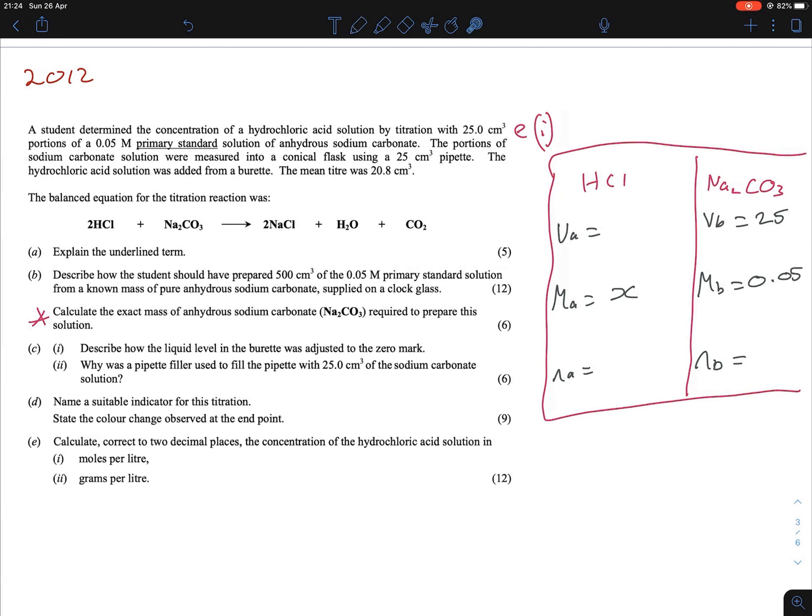We'll continue reading on. The portions of the sodium carbonate were measured in a conical flask with a 25 cm³ pipette. That's just how they measured the Na₂CO₃, the volume of it. The HCl solution was added from burette, and the mean titration figure was 20.8. So that's our volume for the HCl. And the final part there, your N's, that's just your ratio. And if you go to your equation over here, you can see it's 2 to 1. So we have our 2 to 1 here.